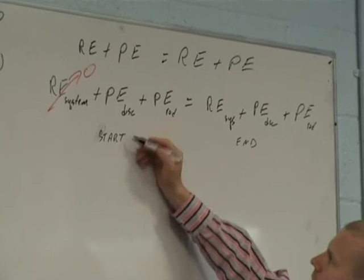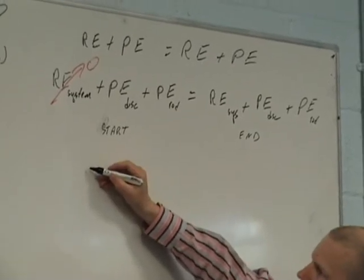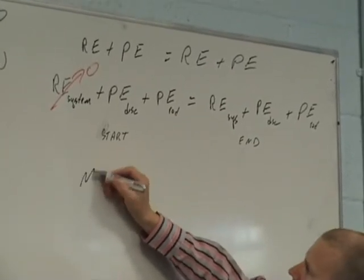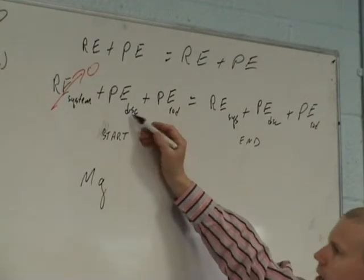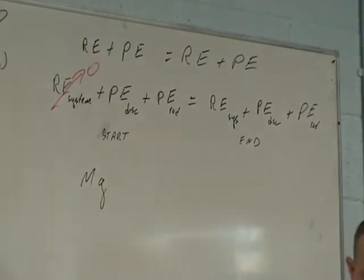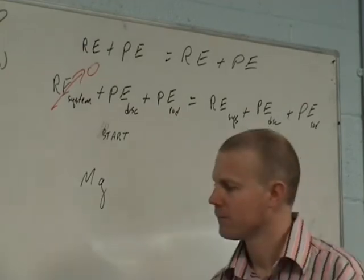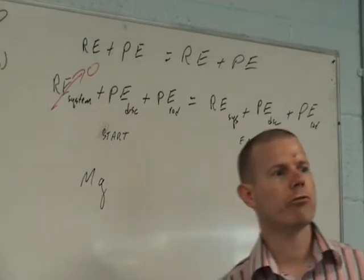Here's where the fun starts. Potential energy formula is MGH and they're all mass M, so I don't have to worry about that. G is just G. What's H for the disk?